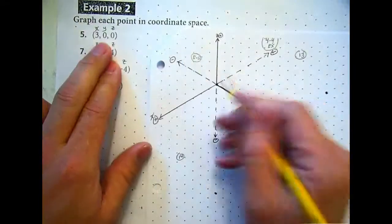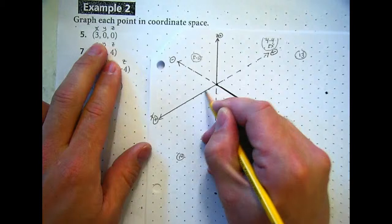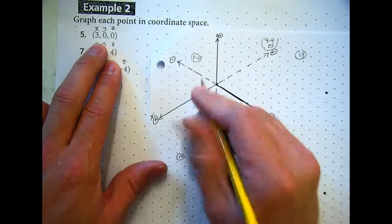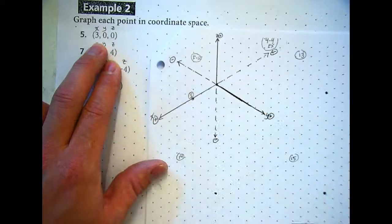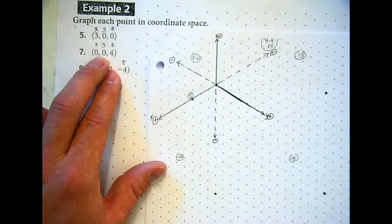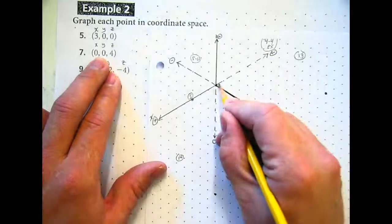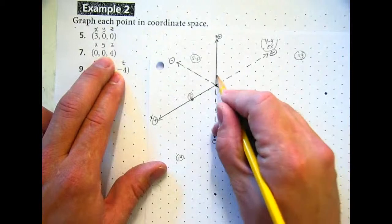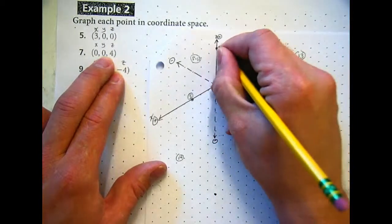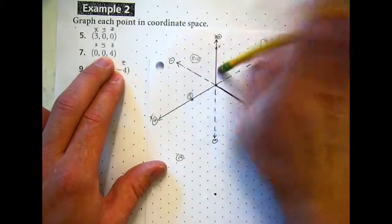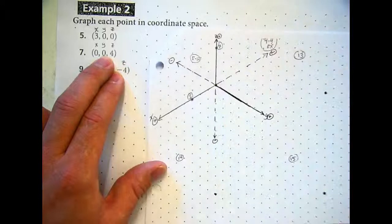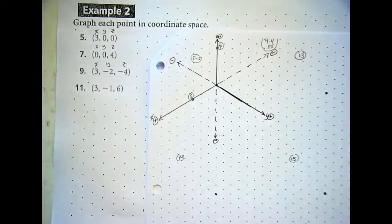Number 5: I'm going 3 on the x — I start at the origin, go 1, 2, 3. I don't go anywhere on y and I don't go anywhere on z, so I put my point there. That is number 5. Number 6: don't go anywhere on x or y, but go up 4 on z. Number 7 is right there. Any questions on that one?